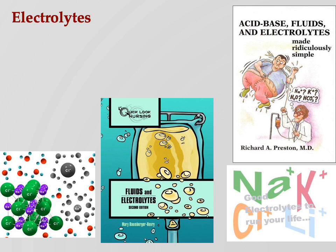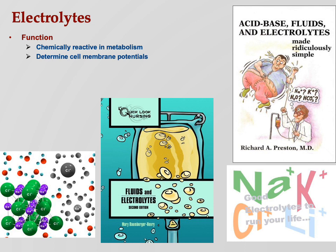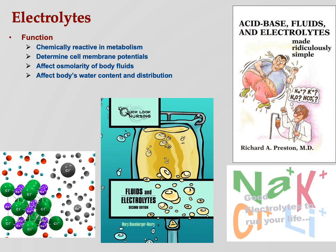Now we start talking about electrolytes — the main solutes we're dealing with in this part of the class. They do lots of metabolic things: we've seen chloride shifts, all the pumps that require sodium, potassium, and hydrogen. They determine cell membrane potentials — remember voltage-gated sodium and potassium channels that drive the action potential, ligand-gated channels, and leakage channels. They affect osmolarity of body fluids, and they affect the body's water content distribution because water follows solutes.